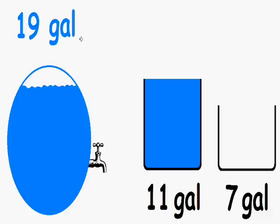So the next thing we are going to do is we are going to take all of the water from the 11 gallon tank and we are going to pour it or pour as much as possible into the 7 gallon tank.